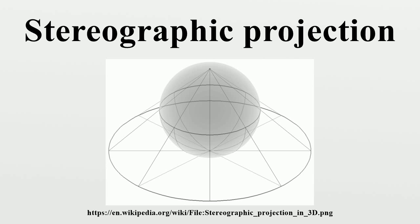Because the sphere and the plane appear in many areas of mathematics and its applications, so does the stereographic projection. It finds use in diverse fields including complex analysis, cartography, geology, and photography. In practice, the projection is carried out by computer or by hand using a special kind of graph paper called the stereographic net, shortened to stereonet or wolfnet.